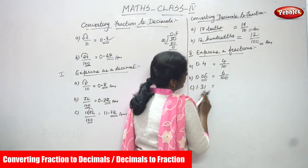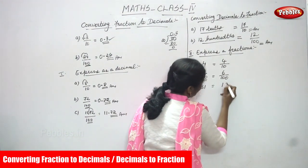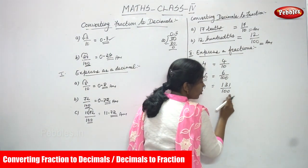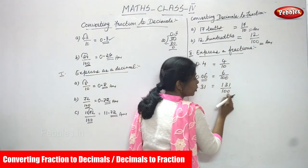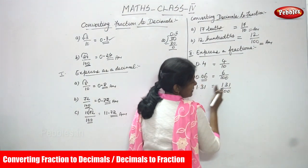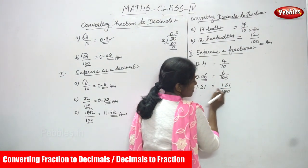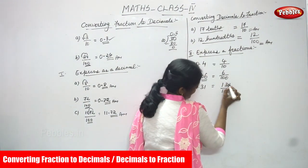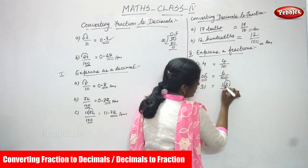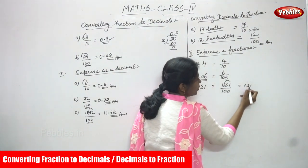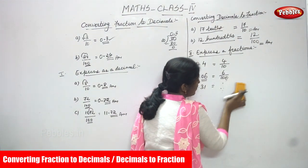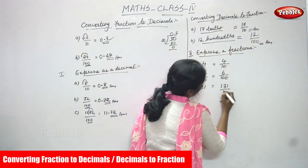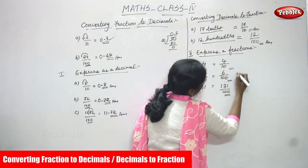For 1.31, after the point there are two digits. So the denominator is 100. You write 131 divided by 100. In 100 there are two zeros, so from the right side you move two points to the left — the point comes between 1 and 31. The answer is 1.31, confirming that 131 by 100 is the right answer for this question.